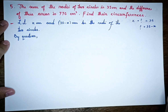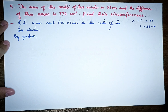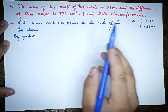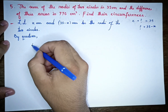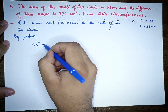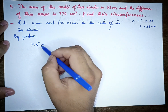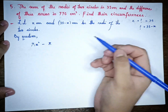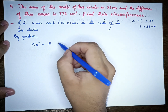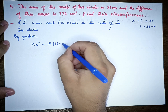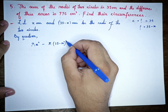The area of a circle is pi r squared. Let one radius be x, so the other radius is 35 minus x. Then the area of the first circle is pi x squared, and the area of the second circle is pi times (35 minus x) whole squared.